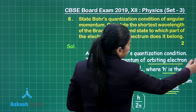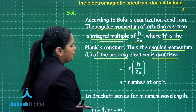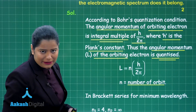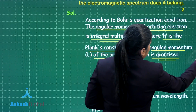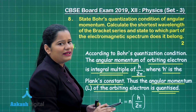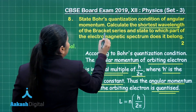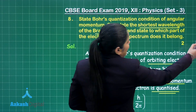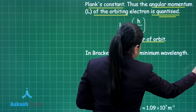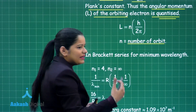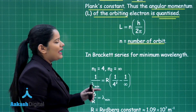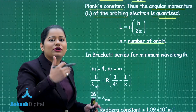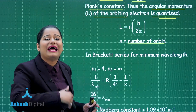The angular momentum is n into h by 2 pi, where n is the number of the orbit in which the electron is orbiting. Further in this question, we were asked to calculate the shortest wavelength of the Brackett series. For the Brackett series, n is going to be 4. The final orbit of the electron will be 4, and for the shortest wavelength, the initial orbit we are going to consider to be at infinity.